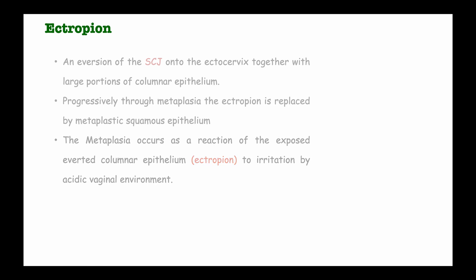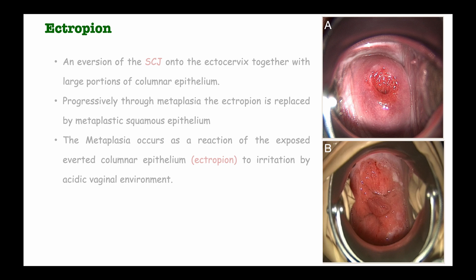On the diagram on the right, image A shows the ectropion, where the columnar epithelium is now visible on the surface of the cervix. The inner surface of the cervix, or endocervix, is normally made up of columnar epithelium, and here it is exposed to the outer surface. Image B shows a large ectropion with a cervical polyp covering the external os.